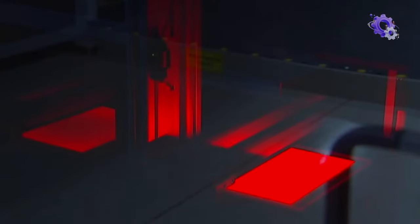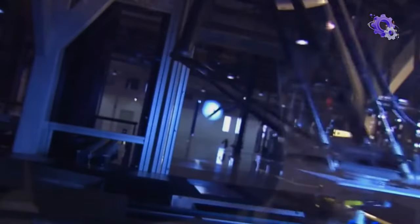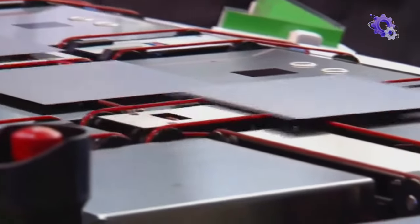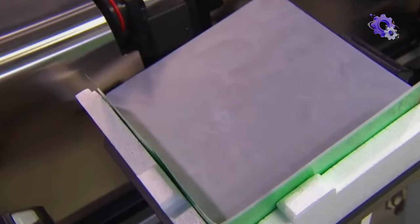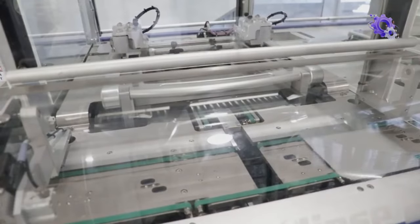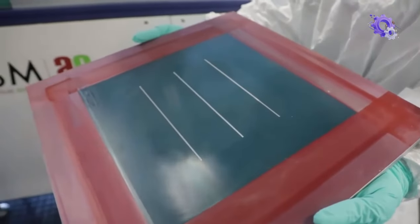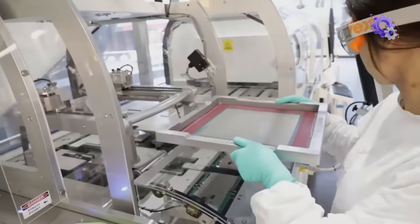All wafers are then measured by fully automated sensors and cameras and graded according to their thickness and surface quality. In the next step, each wafer is processed into a solar cell, capable of converting sunlight into electricity.